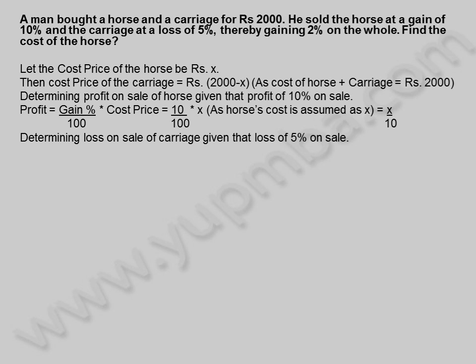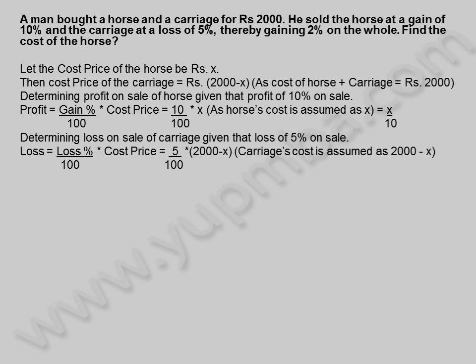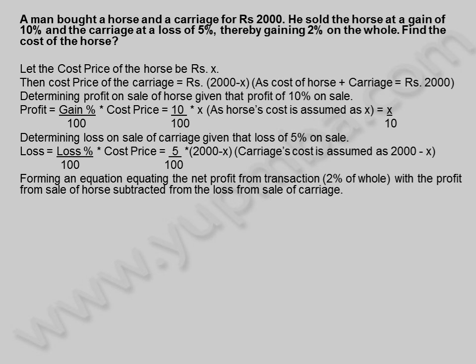Determining loss on sale of carriage given that loss of 5% on sale. Loss is equal to loss percentage divided by 100 into cost price, which equals 5 by 100 into (2,000 minus X), as carriage's cost is assumed as 2,000 minus X.